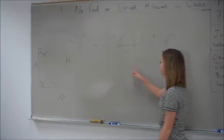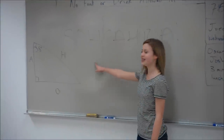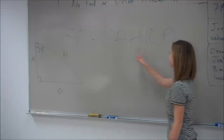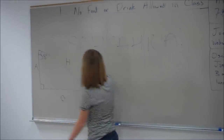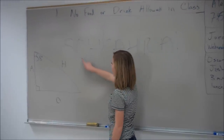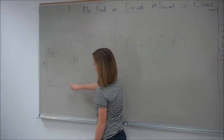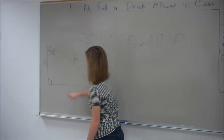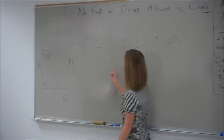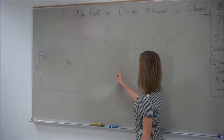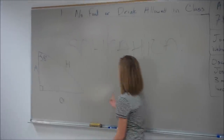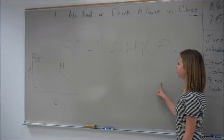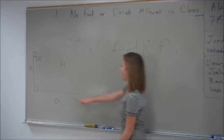SOHCAHTOA is divided into three different parts: sine, cosine, and tangent. For sine, you have to look at opposite and hypotenuse from your angle. For cosine, it's adjacent and hypotenuse. And for tangent, you're looking at opposite and adjacent.